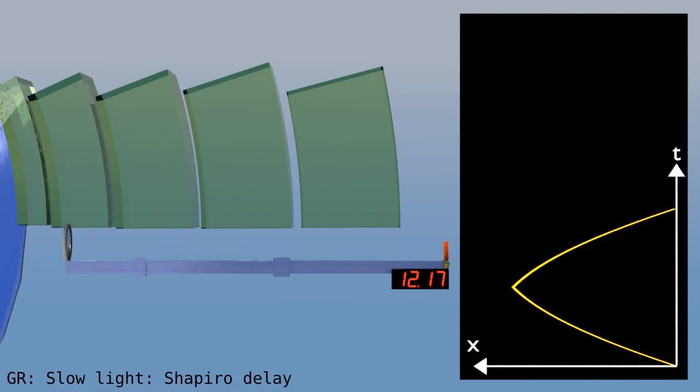Because the speed of light changes along the path, the graph is not two straight lines. Instead, it curves a bit.